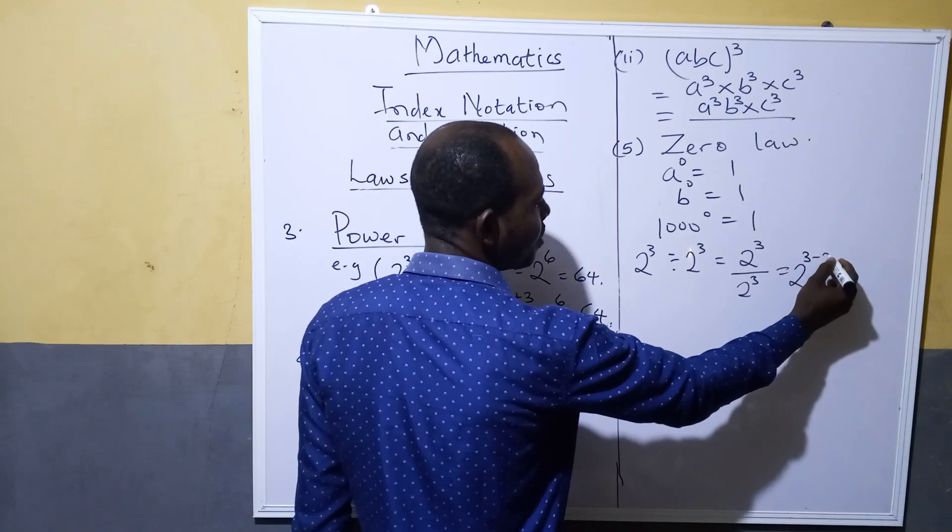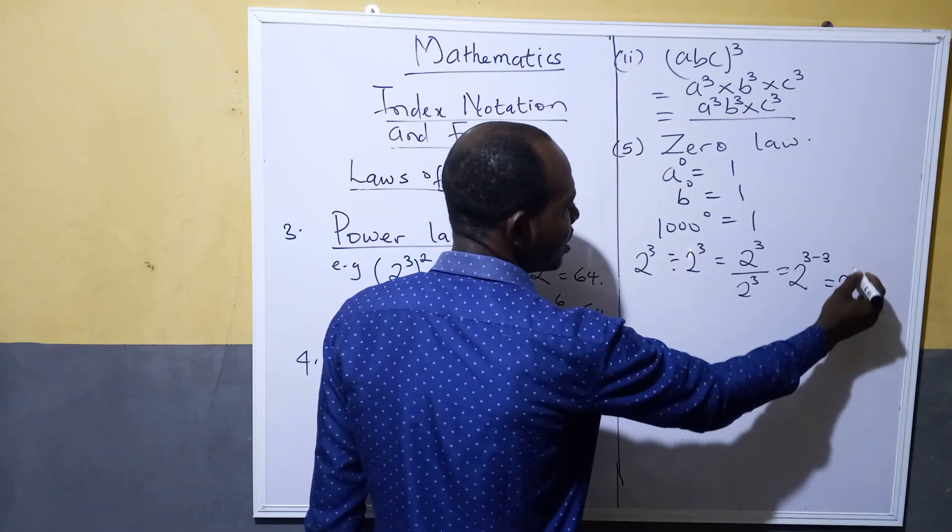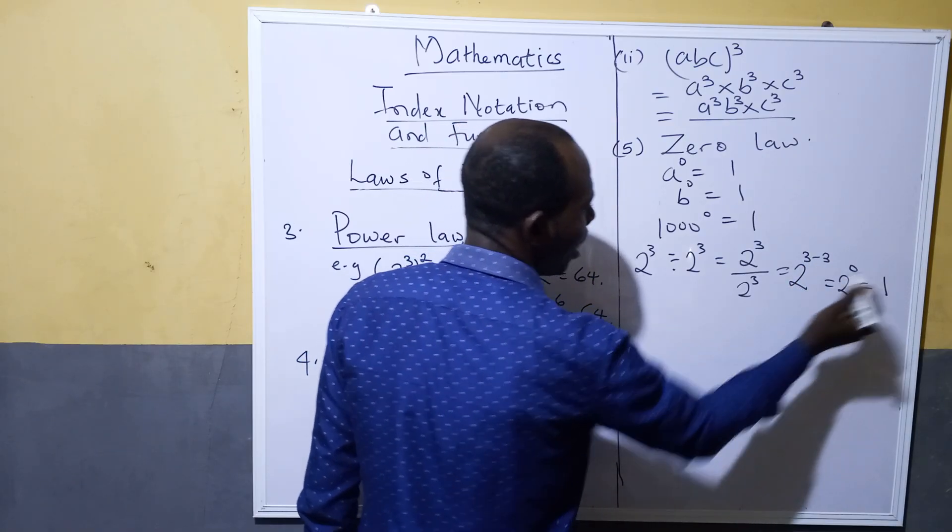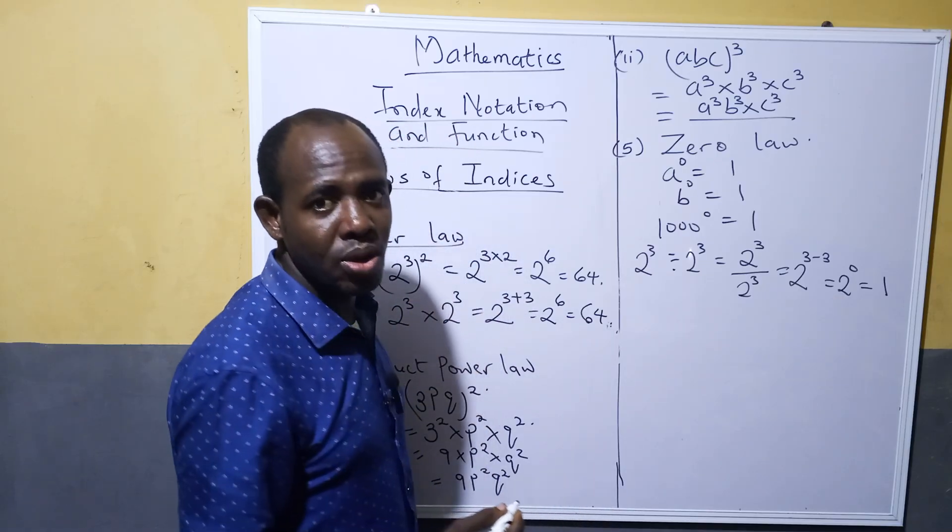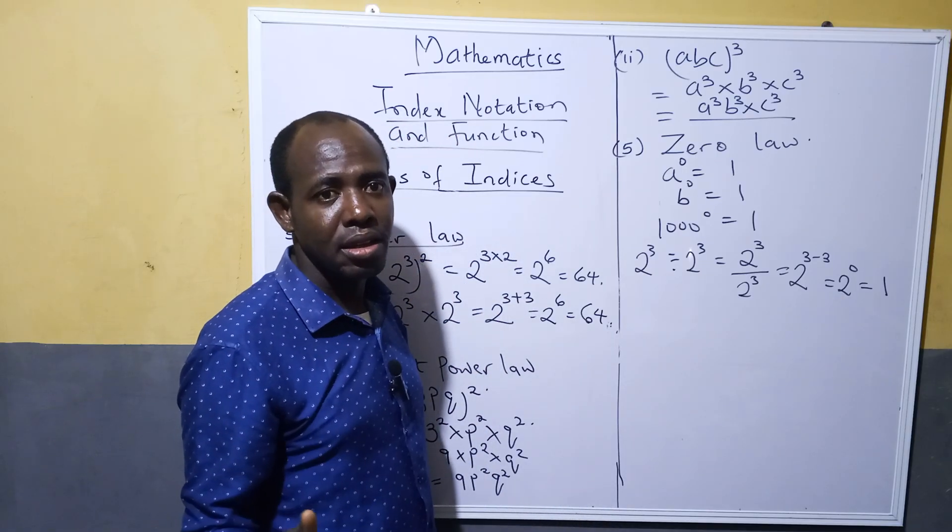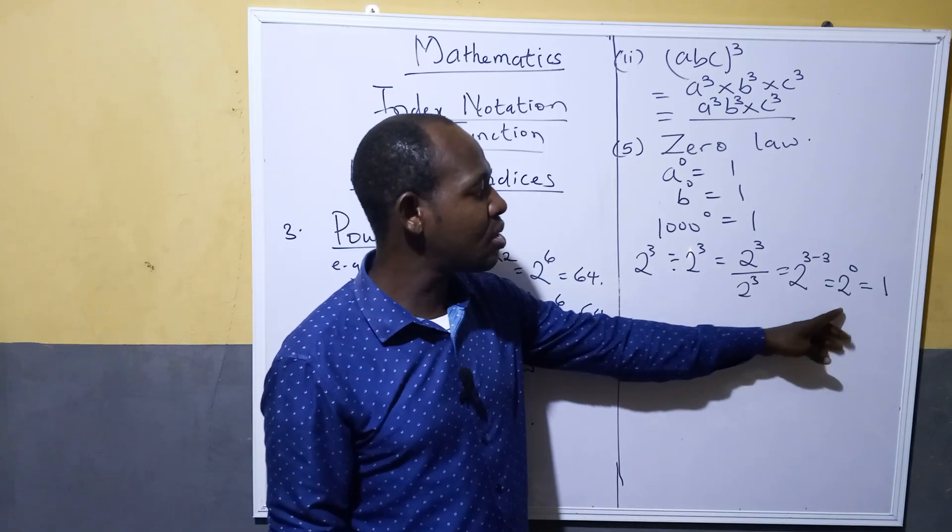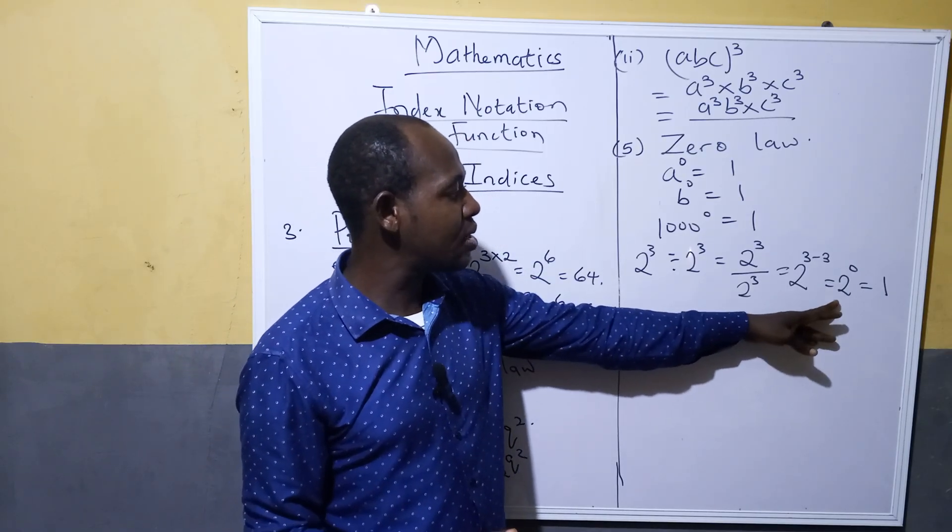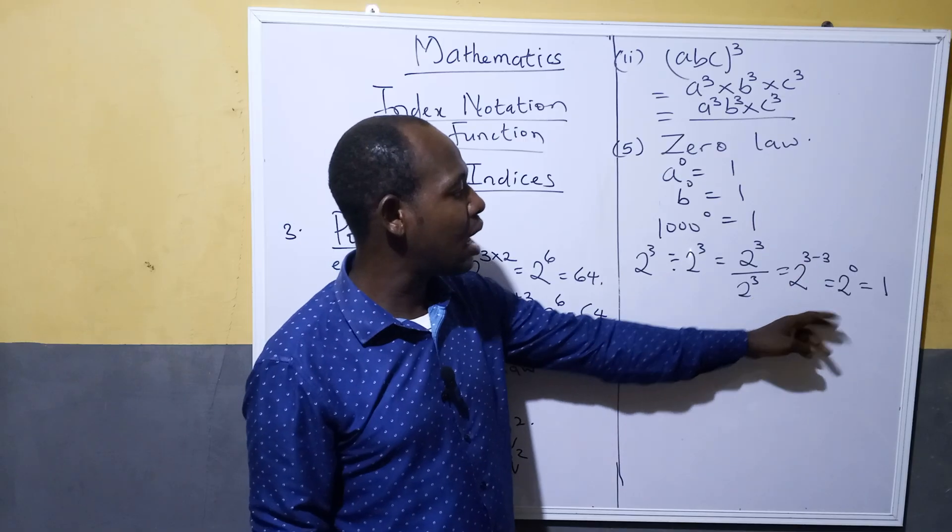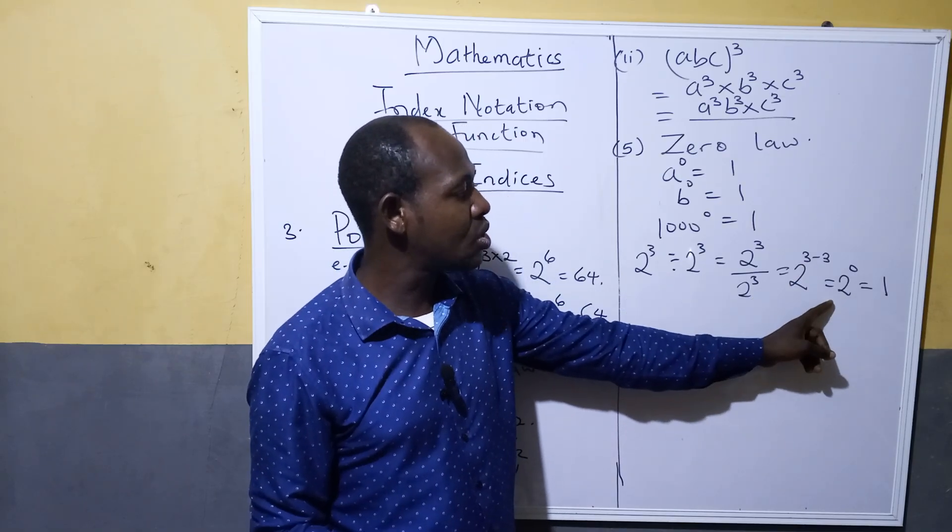Then you have 2 to power 3 minus 3, which equals 2 to power 0, and equals one. So if you are solving a question, especially in multiple choice, and you get to this place but don't see this option, just know that 1 is the same as 2 to power 0. Any x to power 0 is one.